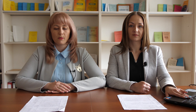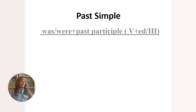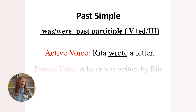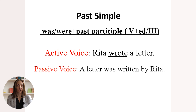Next is past simple. In passive voice, we use the verb 'to be' in past simple — 'was' or 'were' — plus the past participle of the meaningful verb, with the '-ed' ending or the third column of the irregular verb. Active voice example: 'Rita wrote a letter.' In passive voice: 'A letter was written by Rita.'